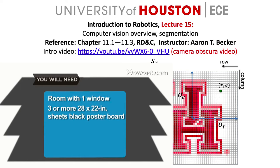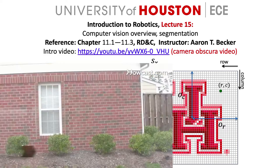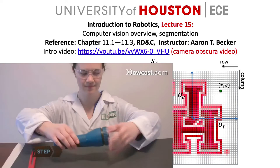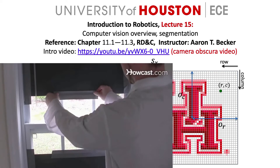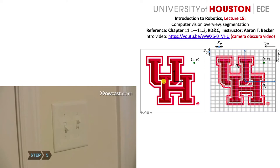If we want our robot to interact with the environment, then our robot must be able to sense that environment. Computer vision is one of the most powerful sensing modalities that currently exist. In lecture 15, we're going to pivot and start looking at computer vision. We're going to get an overview of that and then focus on how to do segmentation — that is, identify which are objects in the scene and which are background. Our reference will be chapter 11 out of Robotic Dynamics and Control.